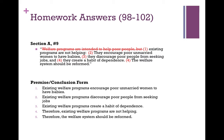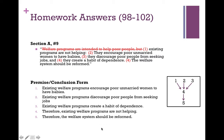In premise-conclusion form: one, existing welfare programs encourage poor, unmarried women to have babies. Two, existing welfare programs discourage poor people from seeking jobs. Three, existing welfare programs create a habit of dependence. Therefore, existing welfare programs are not helping. Therefore, the welfare system should be reformed. One, two, and three all constitute separate independent reasons for thinking welfare programs are not helping, and because they aren't helping, they should be reformed. When we put things into premise-conclusion form, we often have to rearrange things from how they first appeared.